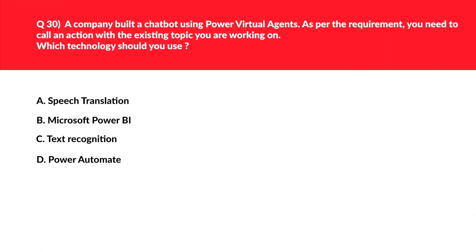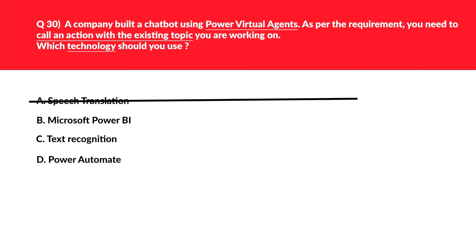This question is related to Power Virtual Agents and we need to call an action within an existing topic. Let's look at option A: speech translation. Speech translation is used for translating audio — as per the question, there is no mention of audio, and the chatbot might be using text for communication. Hence, this option seems incorrect. We'll reject this.